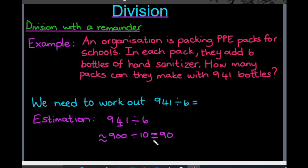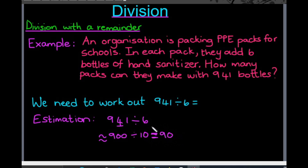The next part of the question, I need to estimate my answer. I've rounded 941 to the nearest 100 and 6 to the nearest 10, which gives me an answer of 90. So my answer should be somewhere around there — not exactly, but somewhere around there.